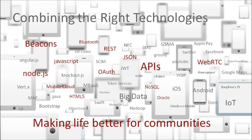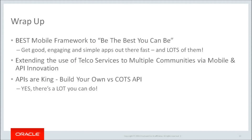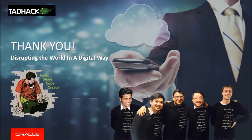To deliver this, we've combined a number of modern digital technologies available today, from beacons to better engage with our users, to APIs making the apps faster and easier to build, to WebRTC giving the capability to connect peers and make experts more readily available. Mobile apps based on the BEST framework can be delivered quickly and adopted by many different communities, regardless of size and how technically savvy they are. We believe that innovation in mobility and API can really help extend the use of telco services to multiple communities, enabling them to be the best they can be. Thank you so much for watching.